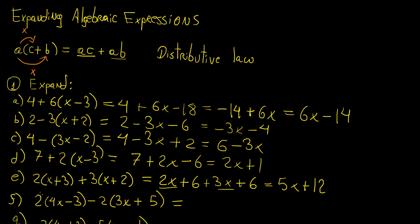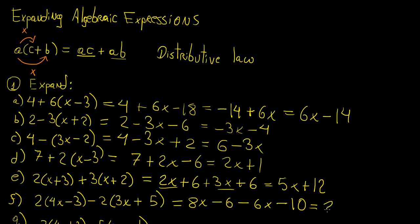For this one we have 2 times 4x, which is 8x, minus 2 times 3, that's minus 6, minus 2 times 3x, which is minus 6x, and minus 2 times 5 is minus 10. So we collect the like terms: 8x minus 6x is 2x, and minus 6 minus 10 becomes minus 16.